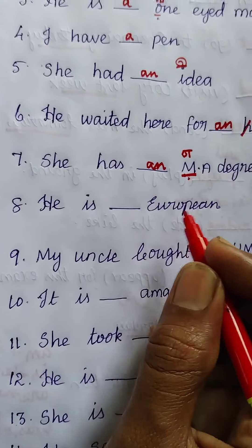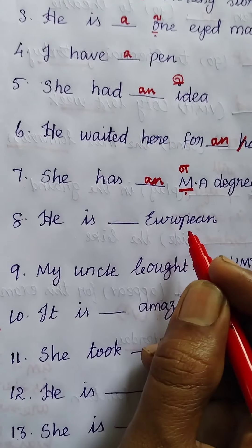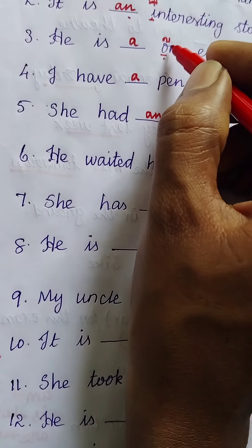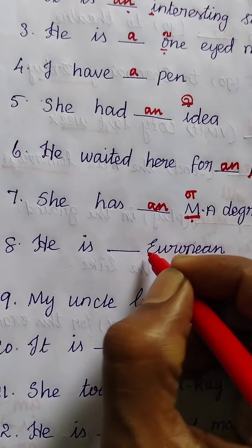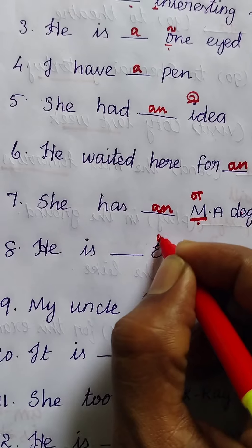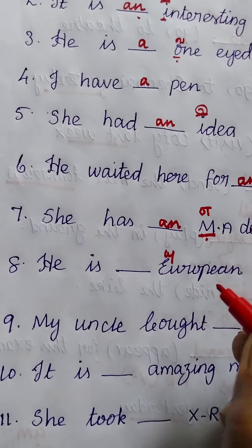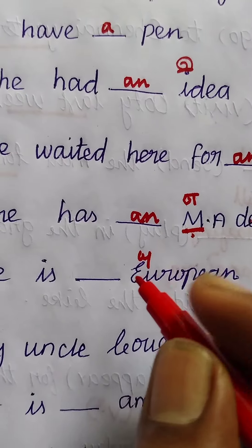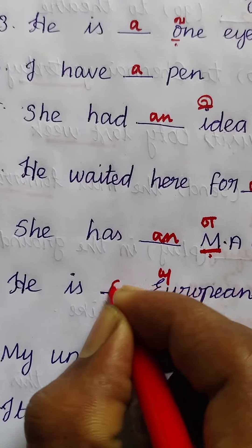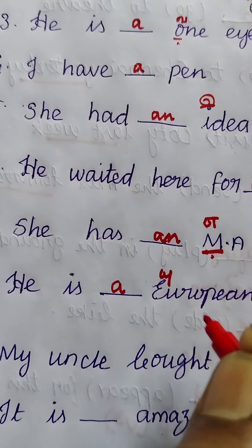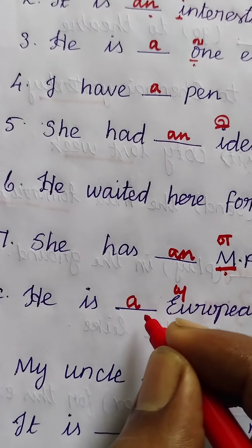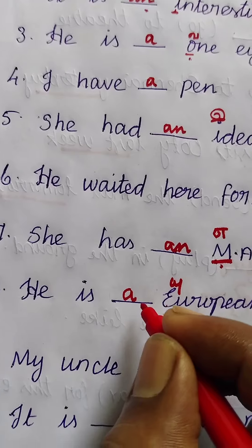Next: 'He is ___ European.' We have already seen that vowel letter with consonant sound means we use 'a'. 'European' starts with E but is pronounced 'yoo' — that is not a vowel sound. Hence the answer is 'a'. Vowel letter with consonant sound means we use article 'a'.